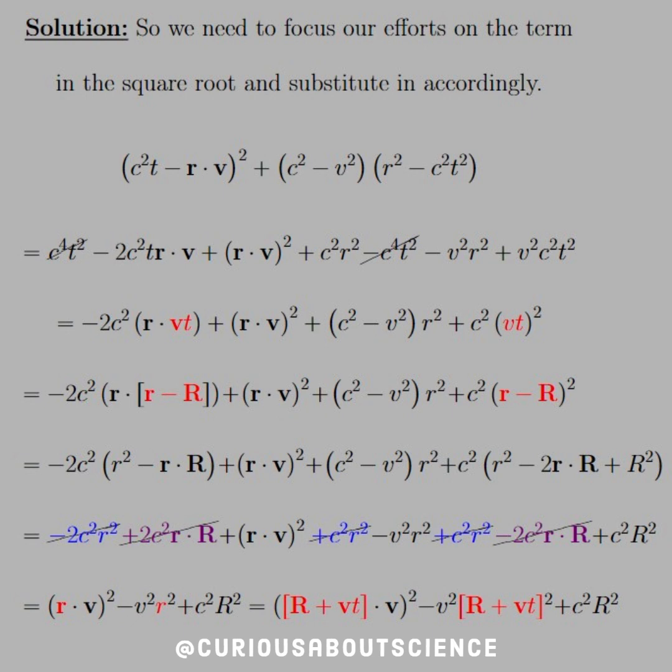So we substitute that in. Let's go ahead and do some more expanding and simplifying. After we substitute in, which we saw in red, the next line down, little r dot little r gives us r squared. And then we have little r dot big R. That's the dot product we need to evaluate. And then we just carry down the r dot v with us. C squared minus v squared, r squared stays with us. And now we expand the r minus big R squared term. So we get r squared minus two little r dot big R plus big R squared.